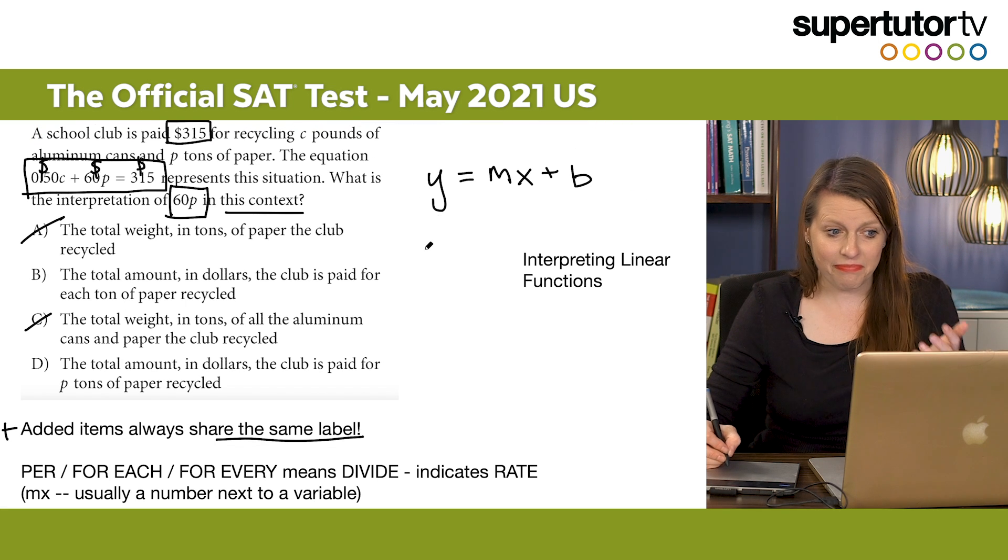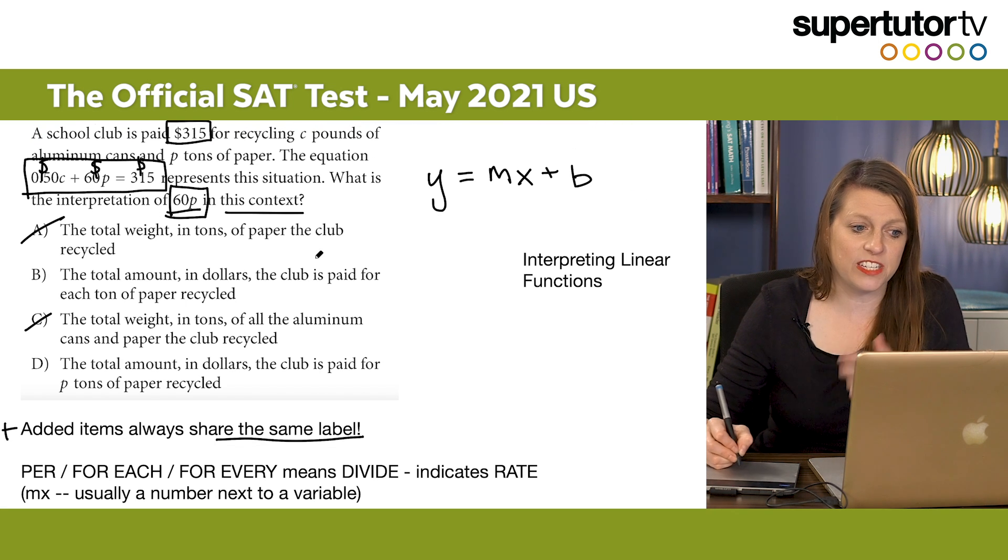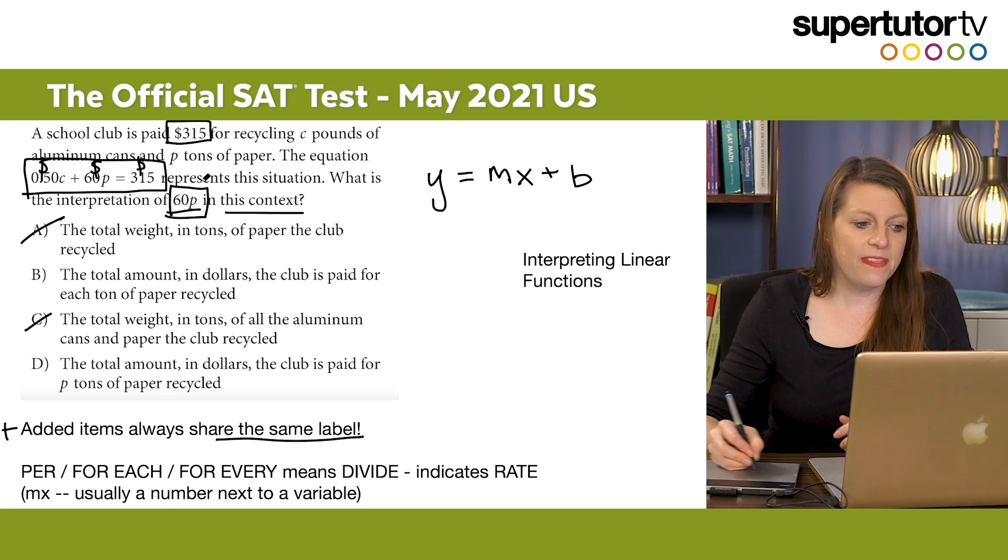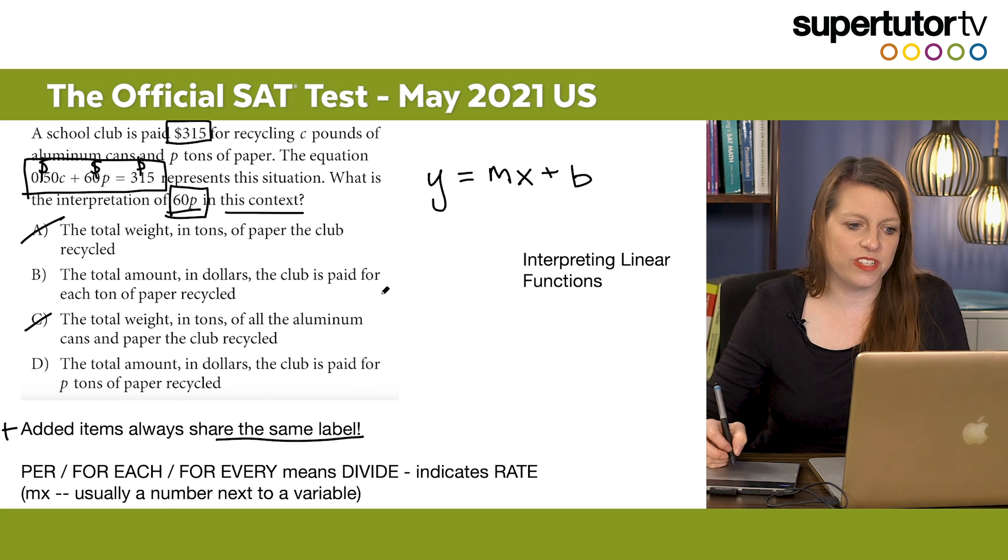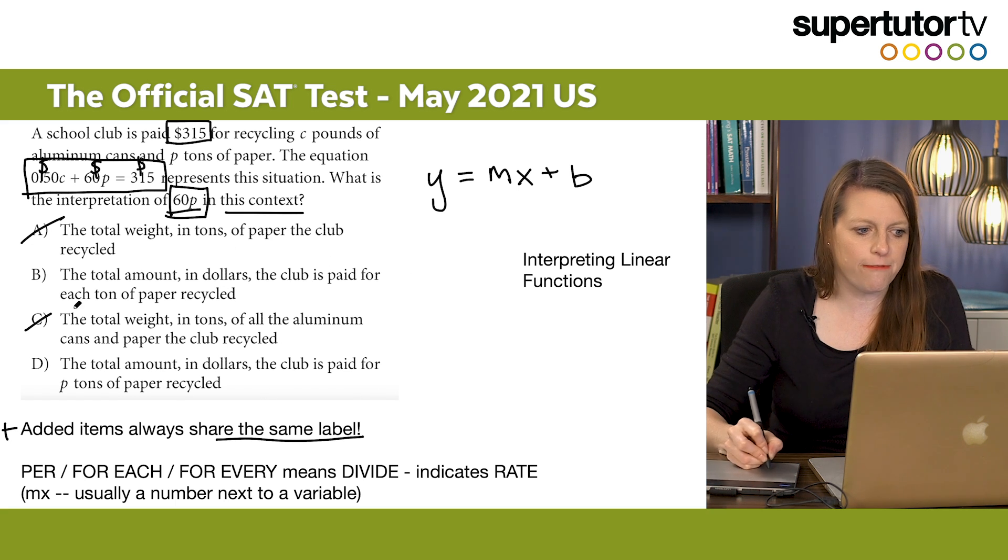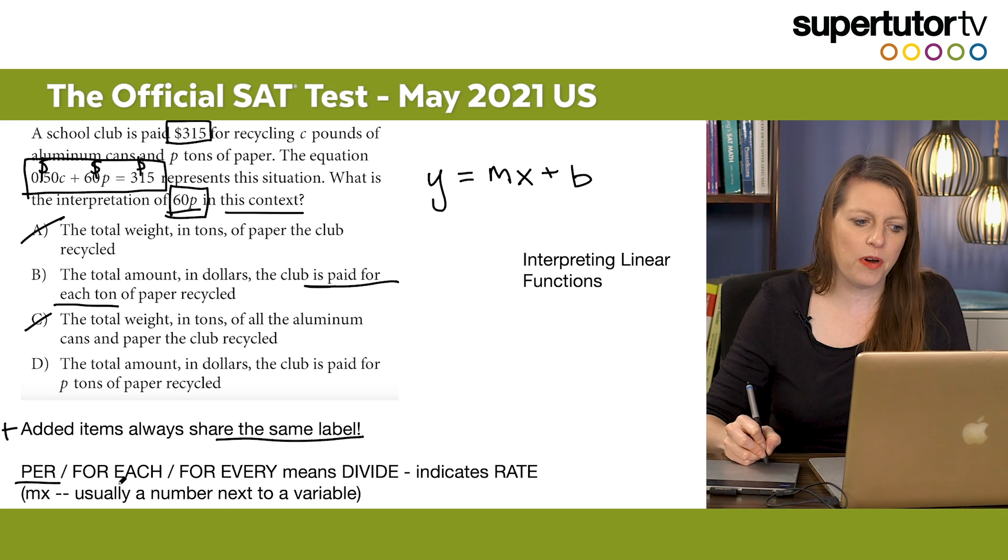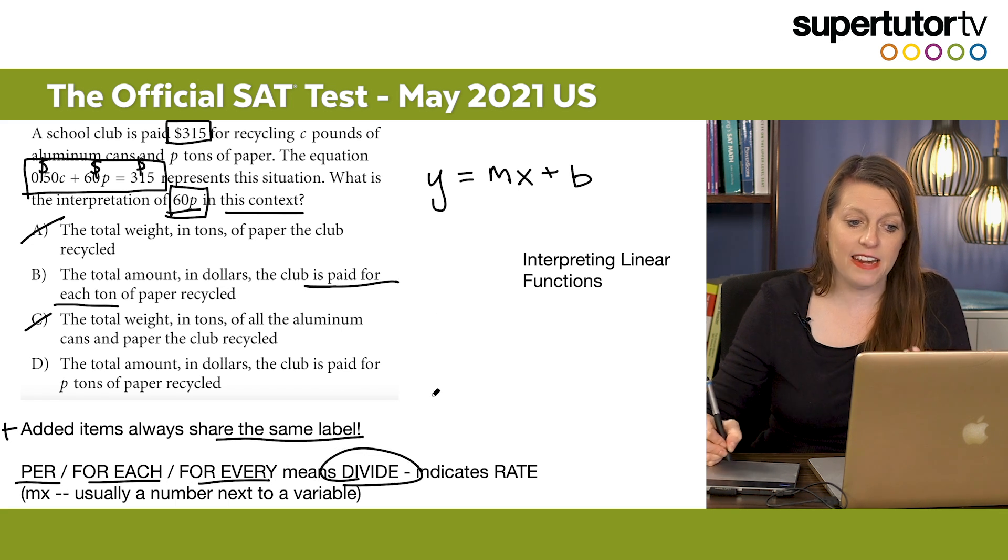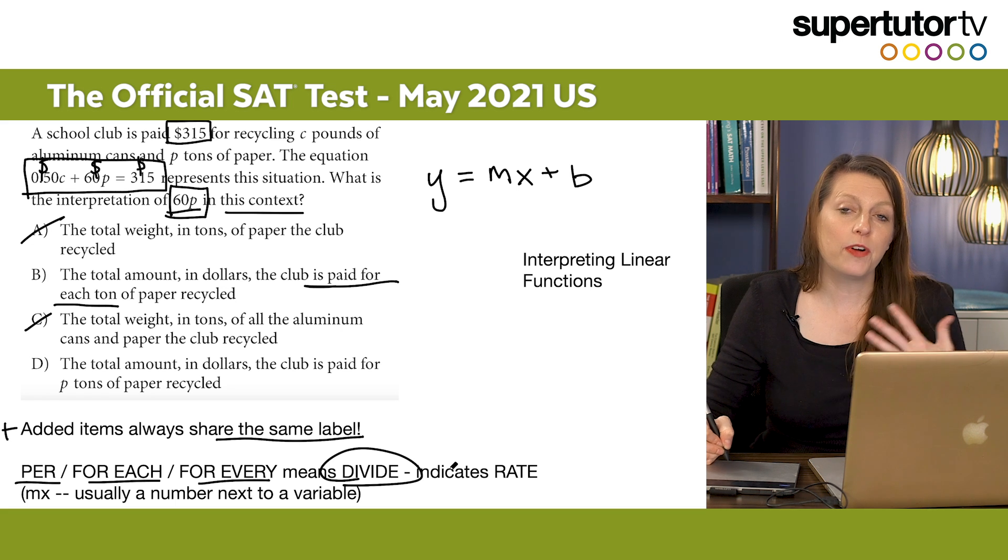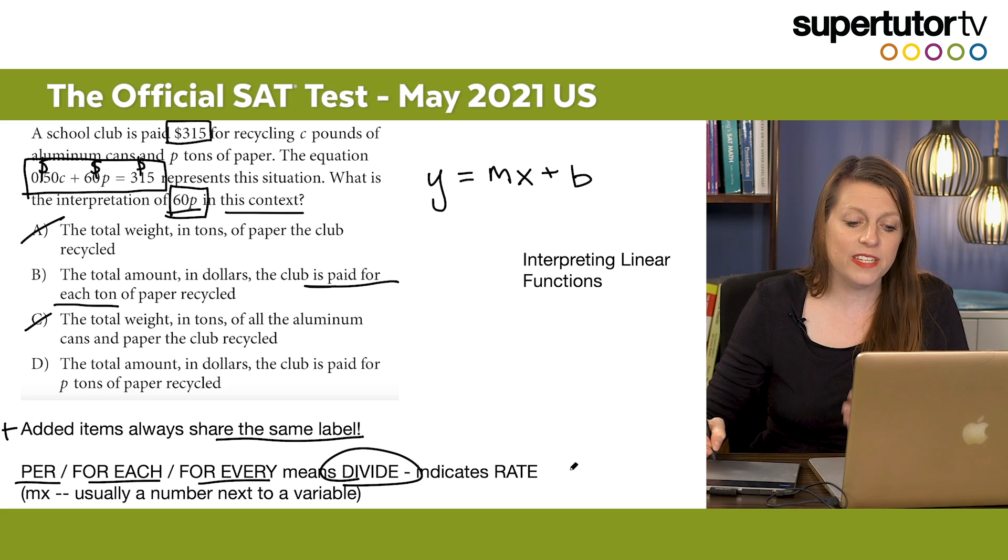Next tip is that I'm going to try to figure out what 60p means in this context and then I'm going to look at the differences between the two answer choices left. It says here the club is paid for each ton. And then I'm going to get into my second tip. Whenever I see per, for each, or for every, I know that means divide. And when we have per, for each, or for every, it almost always indicates some sort of rate. And rate is usually, and this isn't necessarily always, but usually the rate is the m in the mx plus b, meaning it's going to be some coefficient or number multiplied right next to a variable.